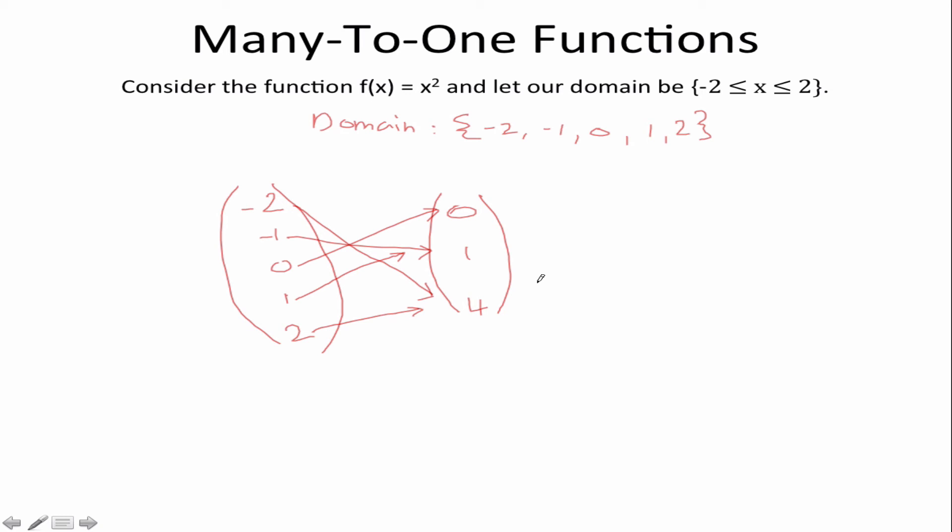It is still by definition a function because every value in this input has its own unique output. However you have more than one value going to the same output and this is why we call this a many to one function.